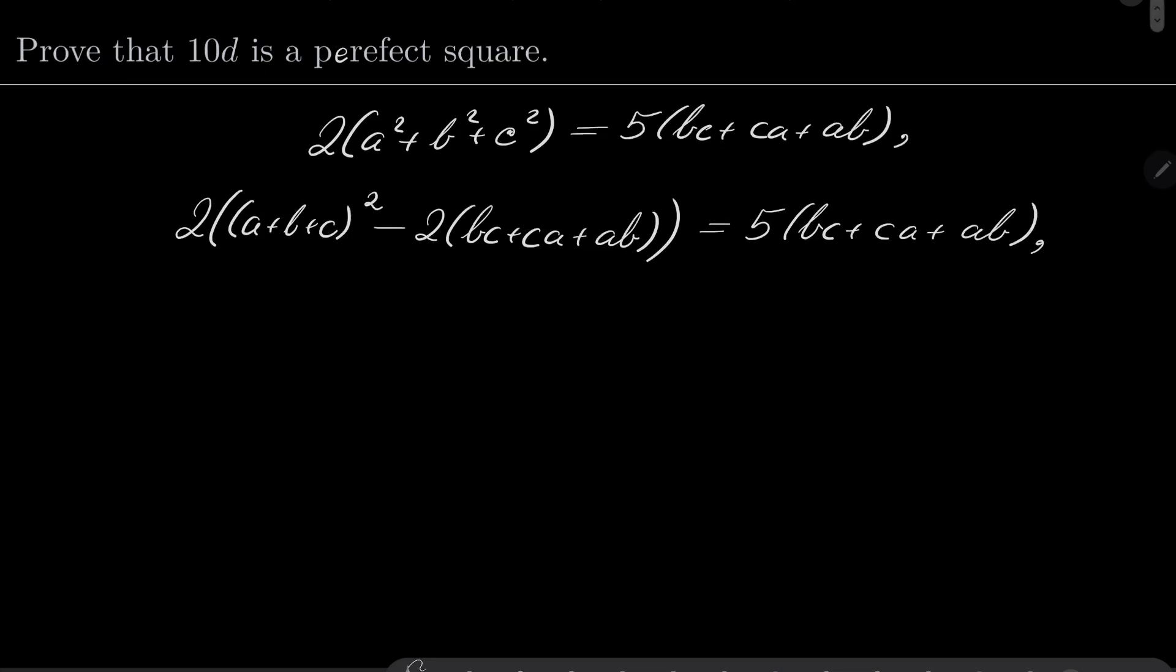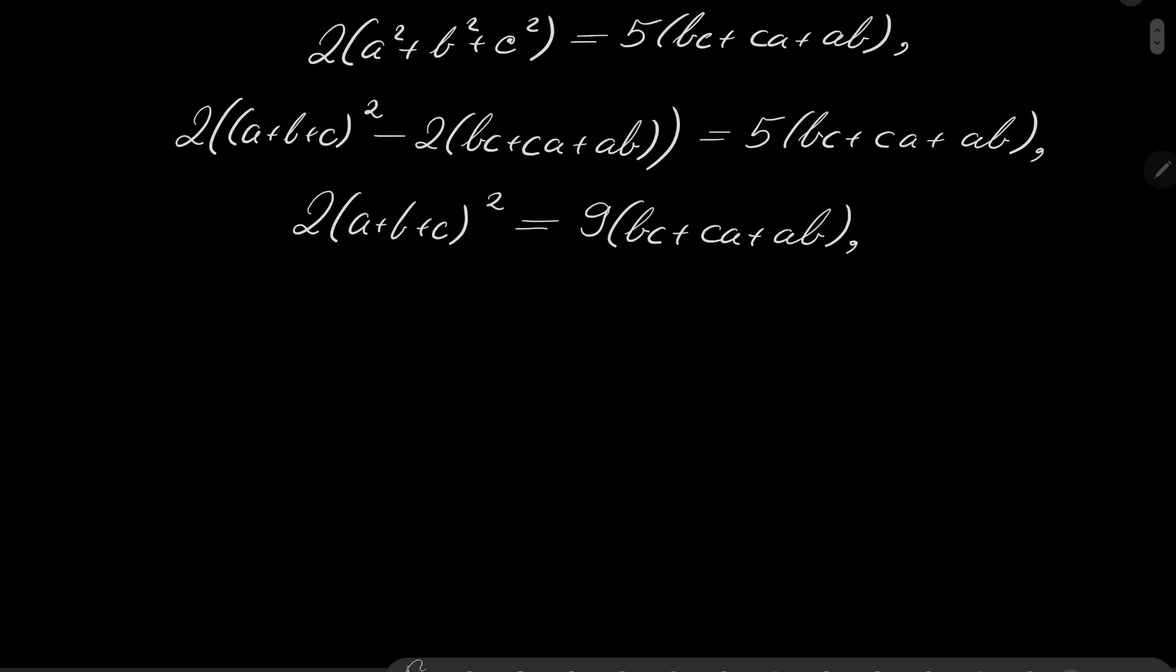It's pretty easy to verify this identity; it's a well-known fact. Now, let's write it like this: 2(a + b + c)². Let's put everything else on the right-hand side. We have 2 times -2 is -4, so we need to add 4, giving us 9(bc + ca + ab), which is very good.